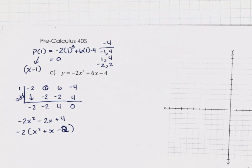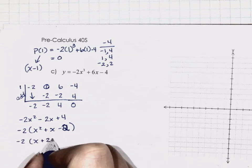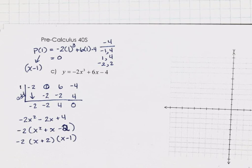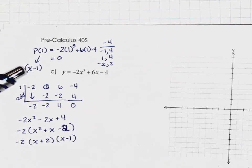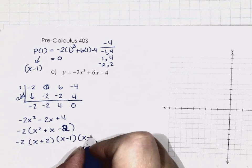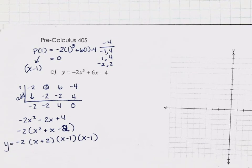This is much better. Can I factor this quadratic? What are the factors of negative 2 that add up to positive 1? Positive 2 and negative 1. So we get (x + 2)(x − 1). What are we missing? The (x − 1) from up top. So now you have your equation in factored form: negative 2 times (x − 1)² times (x + 2).